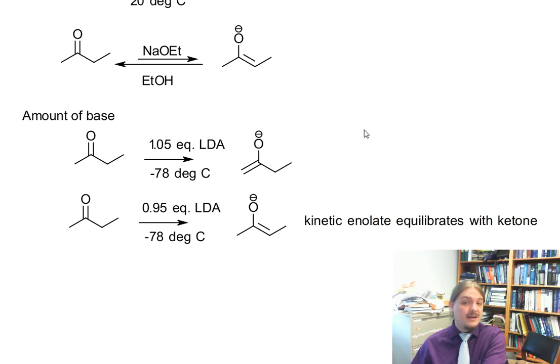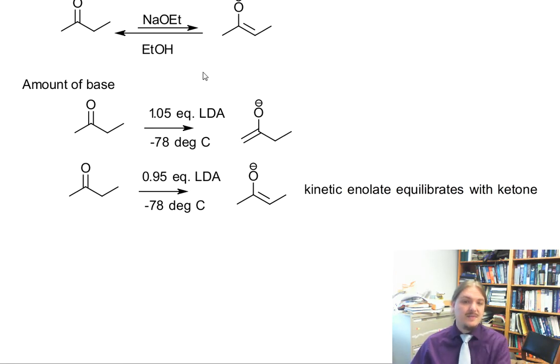Again, since there's unreacted ketone left behind, there's some equilibration that can happen. So this video helps you understand that your base choice can give you control over which enolate forms on a non-symmetric ketone.